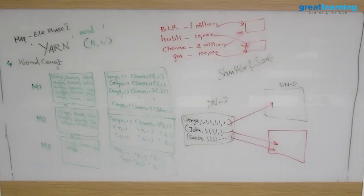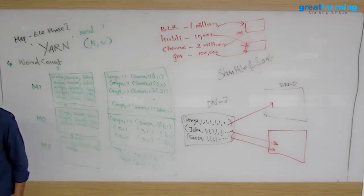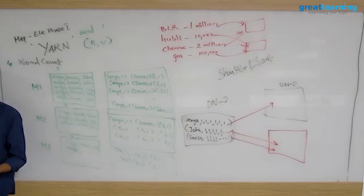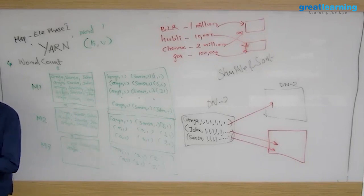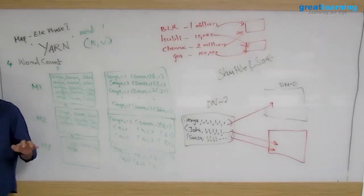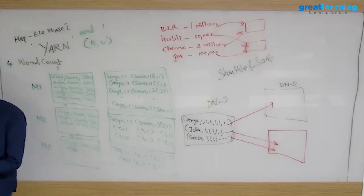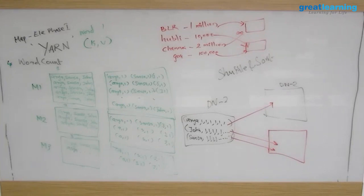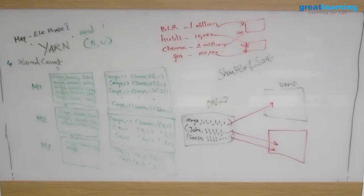MapReduce can do any sort of operation that can be represented in key-value format. The only rule is that your data has to be expressed as key and value. For example, you can use it for image processing, flight delay analysis — I'll show you examples of where it's actually used. You write the logic in the mapper to extract the key and value from the original data.